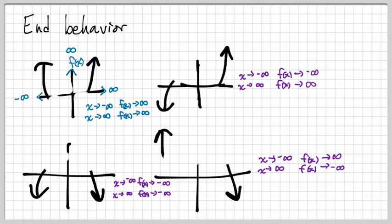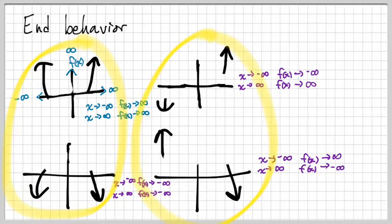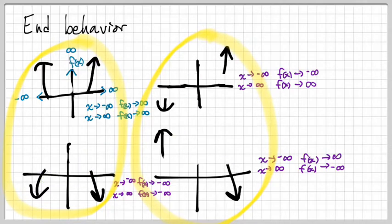The way I like to remember it is using a table. But before we create this table, we have to talk about what all these graphs have in common. There are relationships between these graphs. These graphs are related because the arrows are pointing in the same direction. These are odd polynomial functions and these are even polynomial functions.